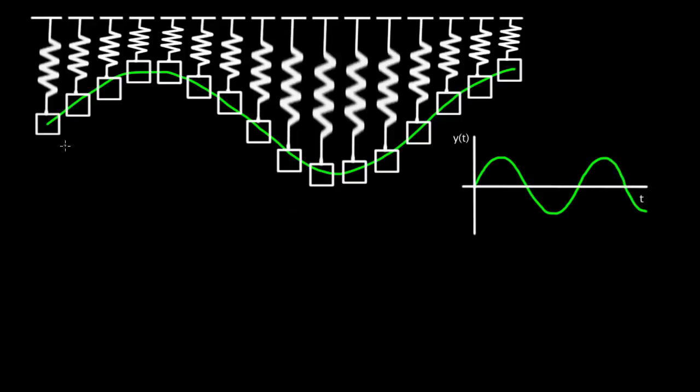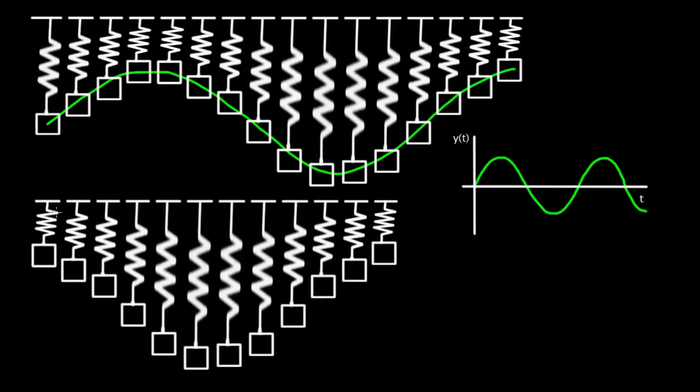But here's my question. Let's say we didn't start the mass in the middle and give it a kick upwards. Let's say at t equals zero, we start the mass all the way at the top and we let it drop. In other words, we do this. We start the mass up here, we let it drop.